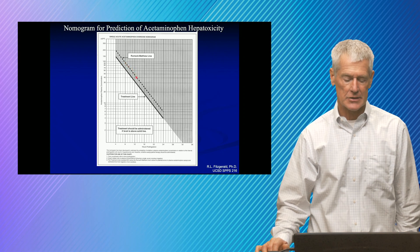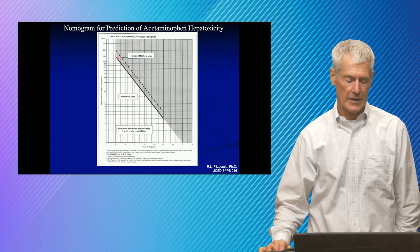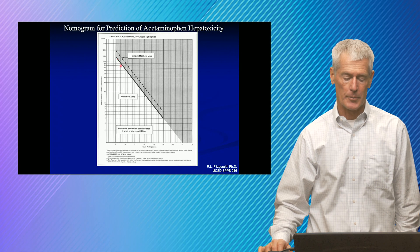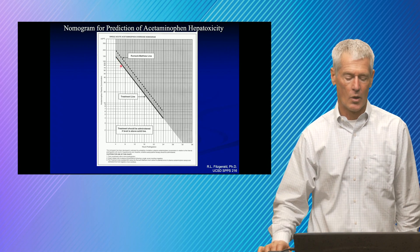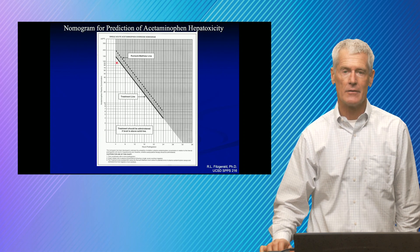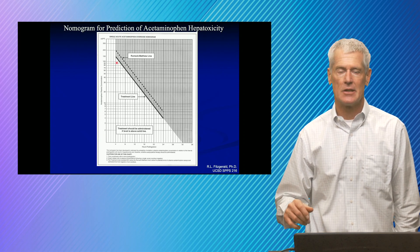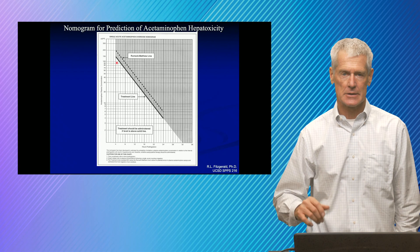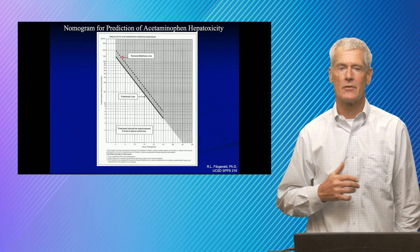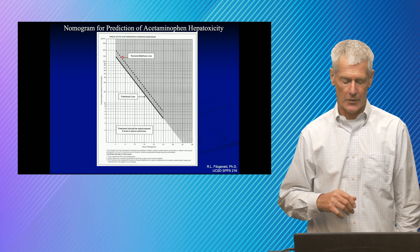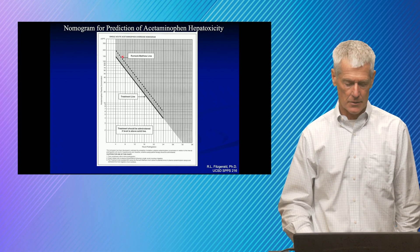This is the line, the Rumac-Matthew line is where toxicity is expected. Sort of the safety line, the treatment line is a little bit lower than that, just to give us a margin of safety. And so what we're talking about here is giving NAC and acetylcysteine. Mucamist is the antidote. And it's completely effective if given in the right timeframe. So an amazing antidote.